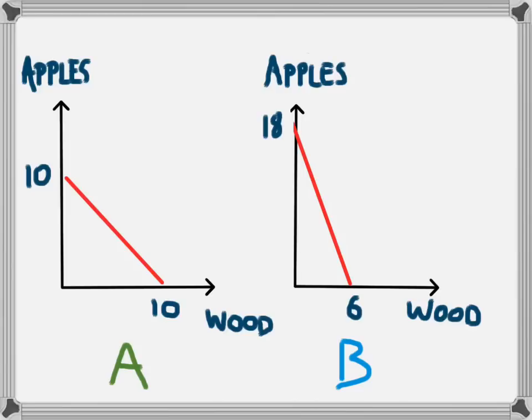Looking at Country A, if they put all of their factors of production into the production of apples they could make 10 apples, or if they specialised in wood they could make 10 units of wood. Country B could make 18 apples with their inputs, or they could make 6 units of wood. At this stage both countries would probably want to produce a combination of those two products so they had some food and some shelter. We're going to say they move to the centre point of each of their production possibility frontiers: for Country A that's 5 apples and 5 units of wood, and for Country B that would be 9 apples and 3 units of wood.